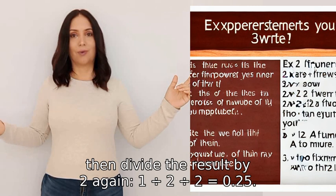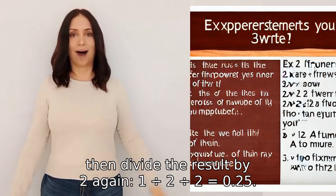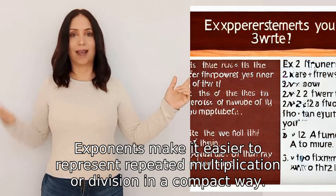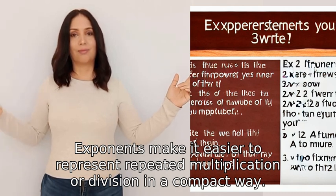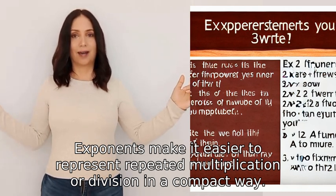by 2 again: 1 ÷ 2 ÷ 2 = 0.25. Exponents make it easier to represent repeated multiplication or division in a compact way.